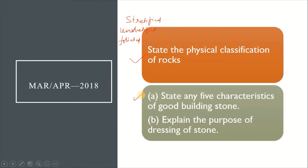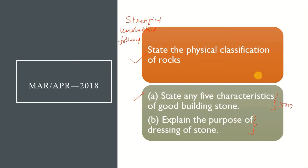The next essay question is: state any 5 characteristics of good building stones, and explain the purpose of dressing of stones. The 5 characteristics of good building stones are: appearance, strength, durability, texture, and structure. We have discussed more than 10 characteristics in previous videos. The purpose of dressing of stones has also been discussed previously.